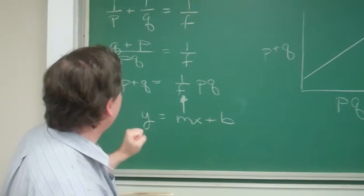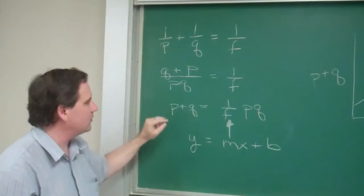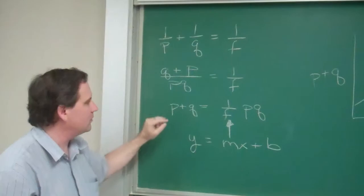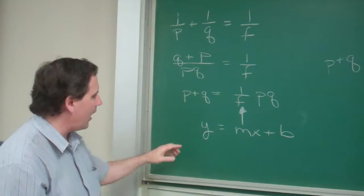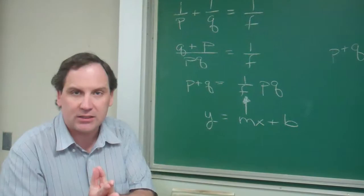So, we know from the thin lens equation that P plus Q is equal to 1 over F. We can reorganize that to Q plus P, or PQ equals 1 over F. We're just combining terms, and then I can do cross-multiply to get that P plus Q equals 1 over F times PQ. Well, if I assume this is a Y equals MX plus B linear plot, then PQ is our X, P plus Q is our Y, B is going to be 0, and our slope is 1 over F. So we can solve this for F using this way.